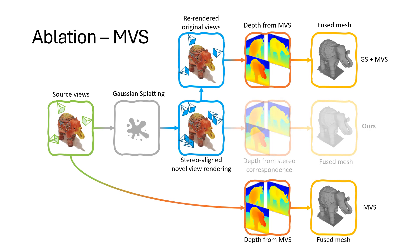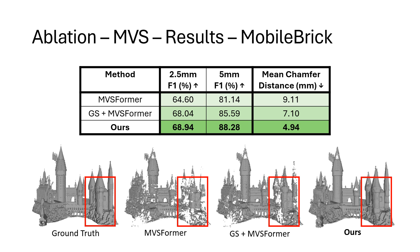We compare both variations with our method. We evaluate these three methods on the MobileBrick dataset, which consists of Lego models. We show that while re-rendering the images does in fact improve the MVS performance, our method still outperforms both ablations, thus strengthening the choice of using novel stereo views.